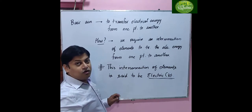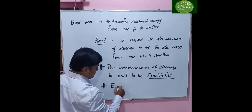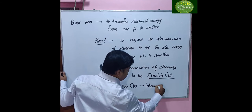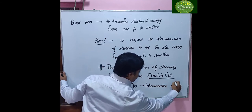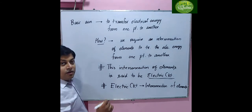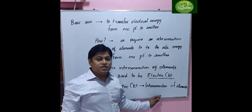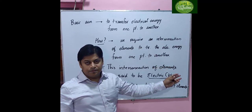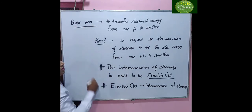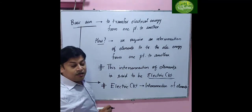That means, in order to transfer the electrical energy from one point to another, we need the help of the electric circuit. An electric circuit is an interconnection of elements. We will see later what elements are used for transferring the electric energy. So, the basic aim is to transfer electrical energy, and for that we require an electric circuit.